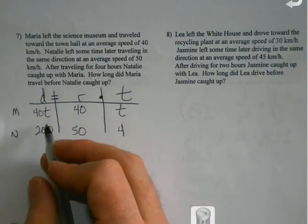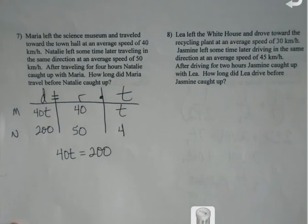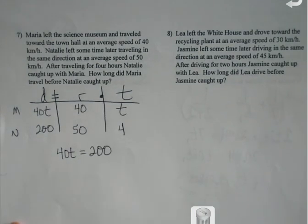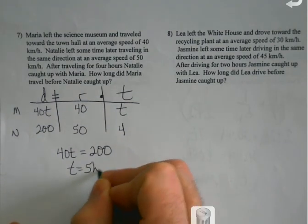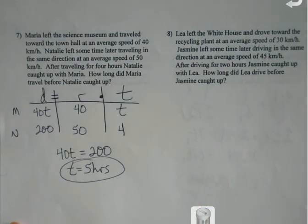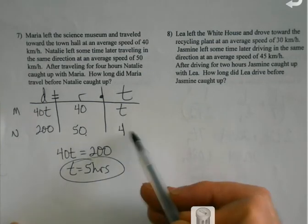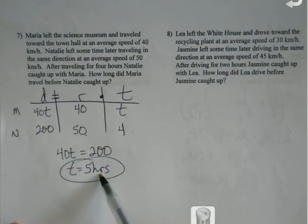So I'm like, oh. So 40 T must equal 200 since they went the same distance. T equals five hours. Does that make sense? Sure. When I was going 50 miles per hour, it only took me four hours. I'm going a slower rate. It's going to take me more time.